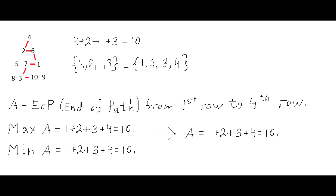This is not an accident. By definition, if we denote by letter A the number at the end of the path in the fourth row, this number A cannot be greater than the sum 1 plus 2 plus 3 plus 4. On the other hand, the numbers that belong to this path cannot be less than 1, 2, 3, and 4, so number A cannot be less than 1 plus 2 plus 3 plus 4. Therefore, number A equals the sum 1 plus 2 plus 3 plus 4, which equals 10.